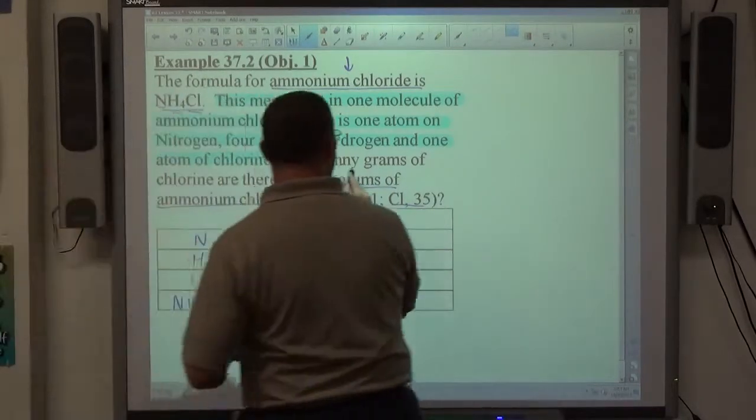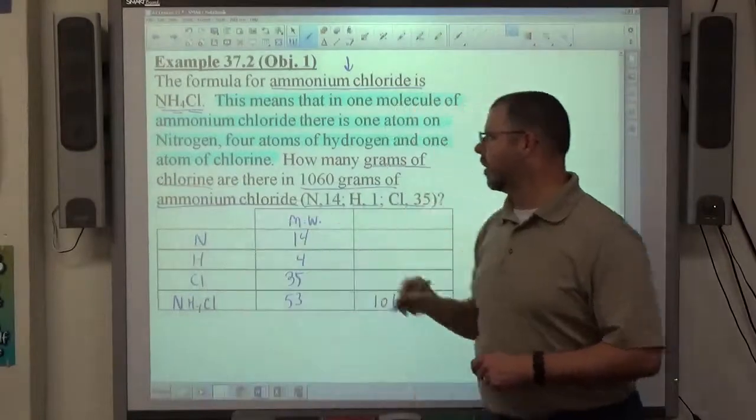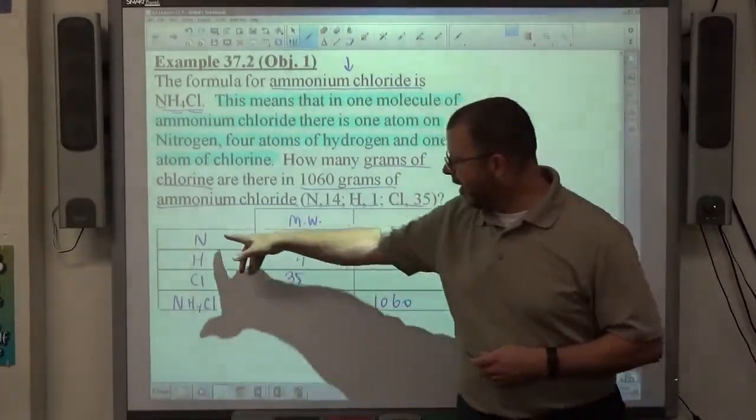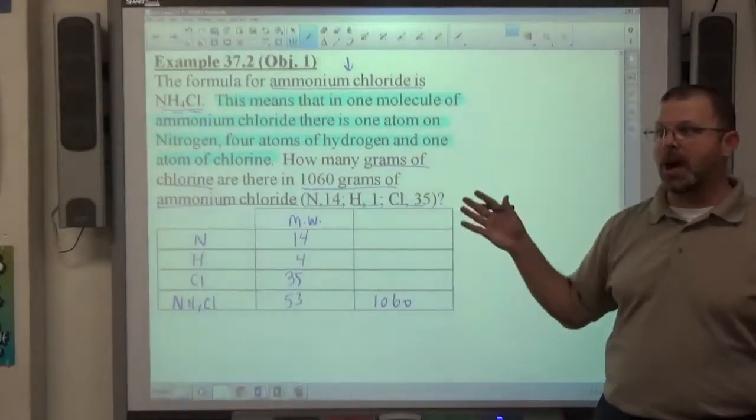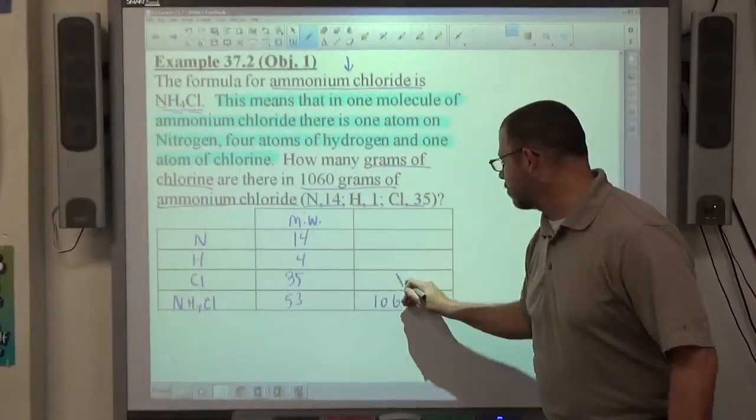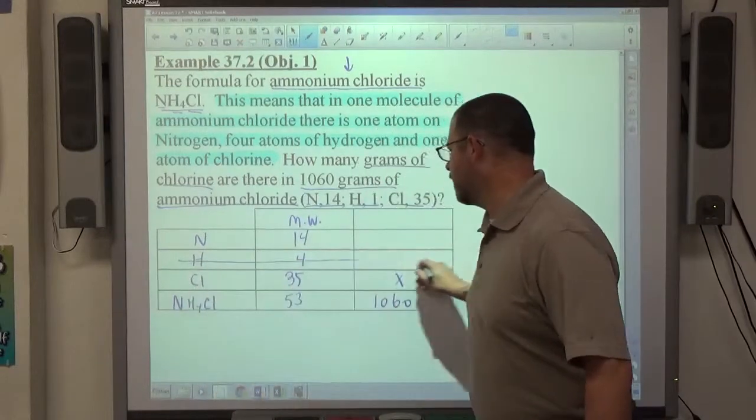And it says, how many grams of chlorine are there? So chlorine, which one's chlorine? I don't know. N, H or CL? Probably CL. Again, that's the whole, let's assume the obvious one. So how many grams of chlorine? That's what we're looking for. H is hydrogen, N is nitrogen.